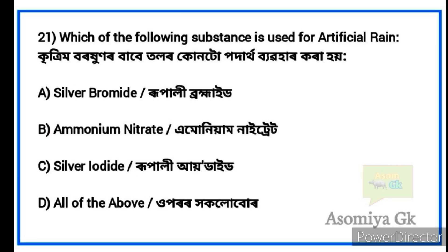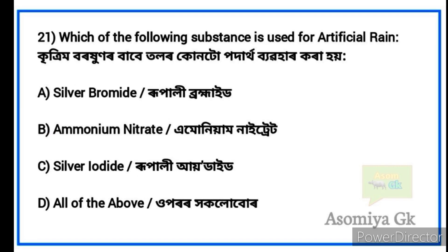Next question: Which substance is used for artificial rain? Option C: Silver iodide. Silver iodide is used for artificial rain.